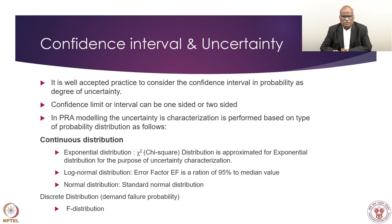Our interest could be on both sides — that is, upper bound and lower bound — or it could be on the upper bound only. So we have either one-sided or two-sided confidence intervals. In PRA modeling, the uncertainty characterization generally takes both sides — upper bound and lower bound — to understand the randomness of the parameter.